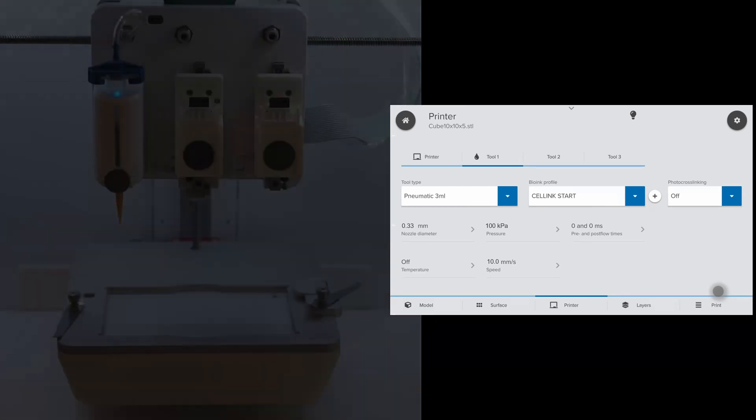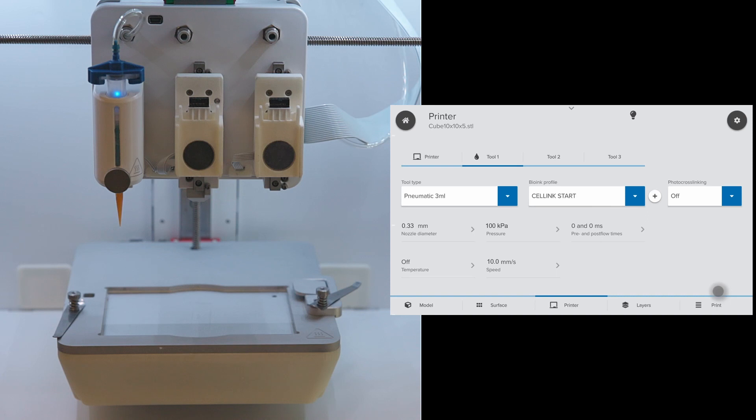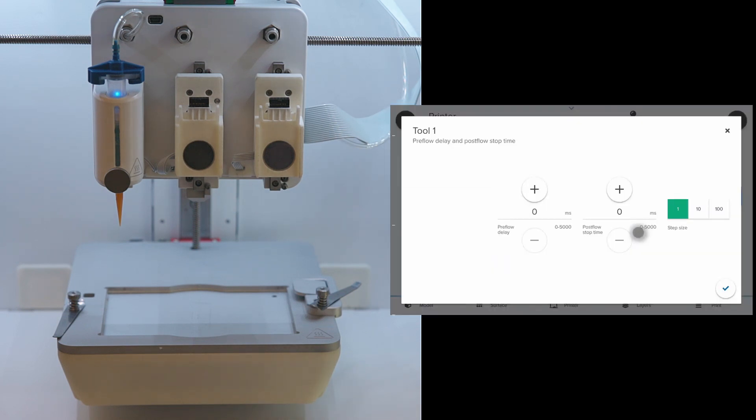Remember, the extrusion pressure and printing speed are dependent on each other and in turn dependent on the needle diameter and ink material. So these values may or may not work with another ink material.